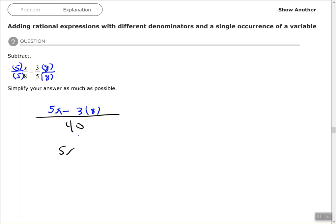So we end up with 5x minus 24 all over 40. So I look here, I see that there is no number that will go into 5x, 40, and 24. They don't have any common factors, so that is my final answer.